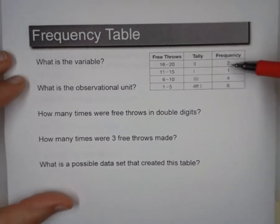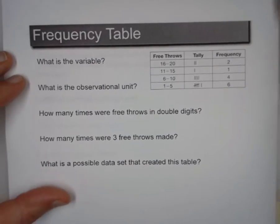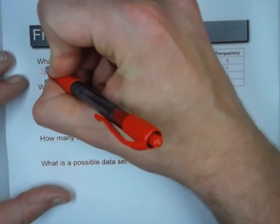And this is the frequency, and the frequency is just the number of tally marks. So what is the variable? Well, it's number of free throws.